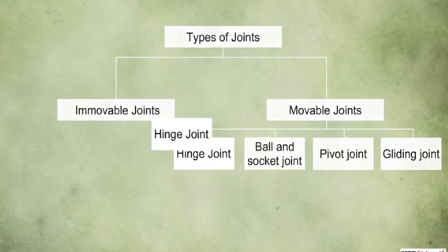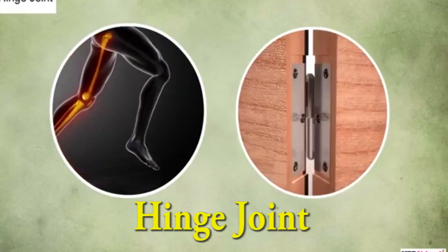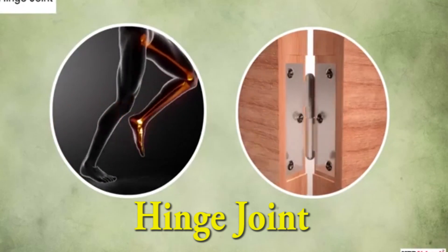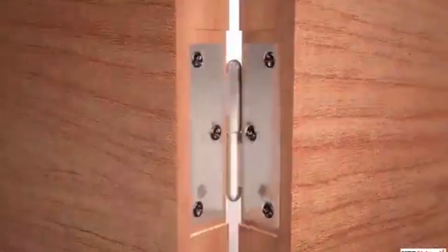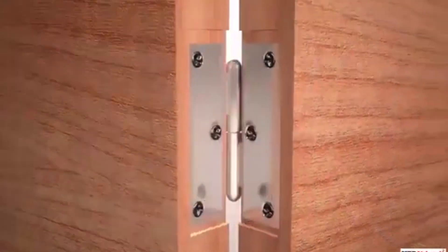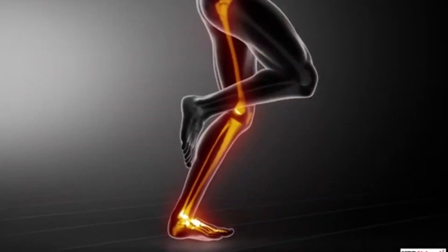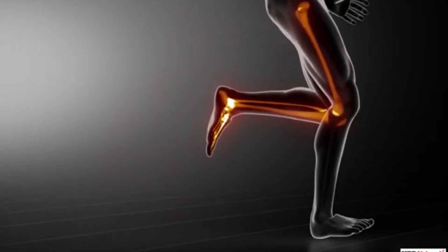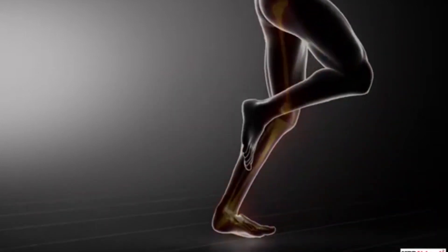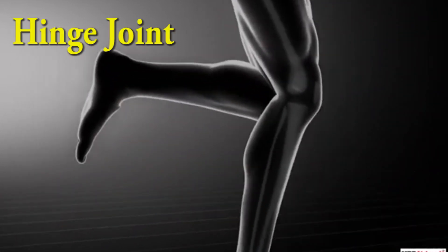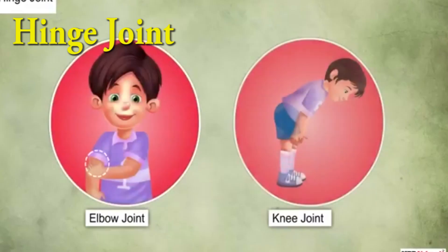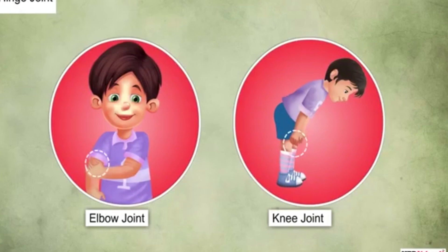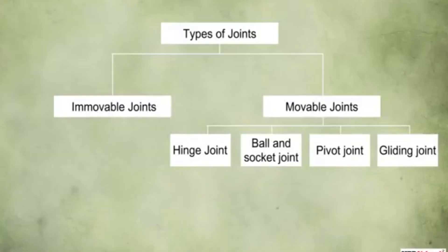Let us first learn about the hinge joint. A hinge joint is very similar to a door hinge. You can see that the door hinge allows the opening and closing of the door in two directions. Similarly, a hinge joint in the body also allows movement in two directions — forward and backward, or upward and downward. The elbow and knee joints are two examples of the hinge joint.